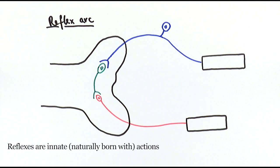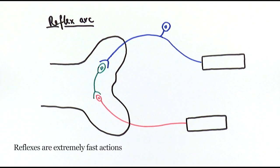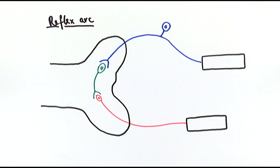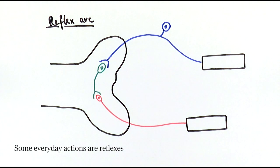Reflexes are also extremely fast because usually they only involve one to two synapses, so they don't require the signal to go through multiple synapses or multiple neurons. It's very quick, simply relying on the speed of diffusion of the neurotransmitters between the synapses. Also, some reflexes are part of our everyday actions — for example, the blinking reflex — and we probably do a lot more reflexes than we realize because we just think of them as natural body responses.